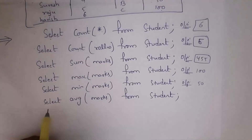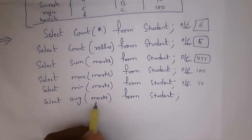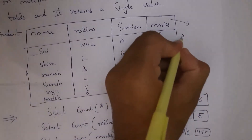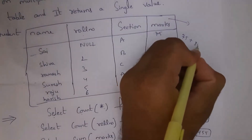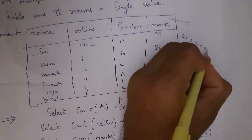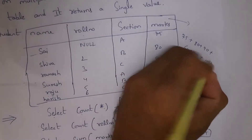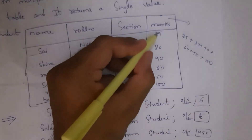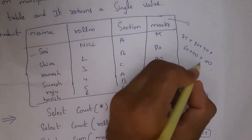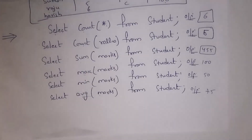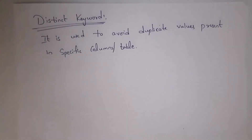The last function is the average function — AVG. I write: SELECT AVG(marks) FROM student. To calculate the average: 75 + 80 + 90 + 60 + 50 + 100 divided by 6 rows = 75. So the output is 75. These are the various aggregate functions.